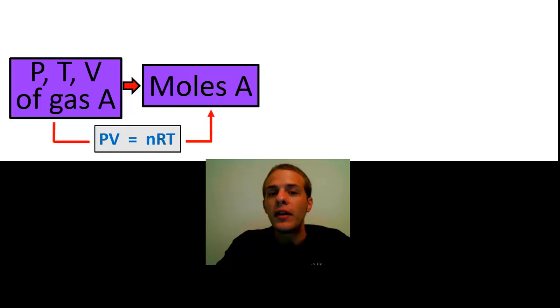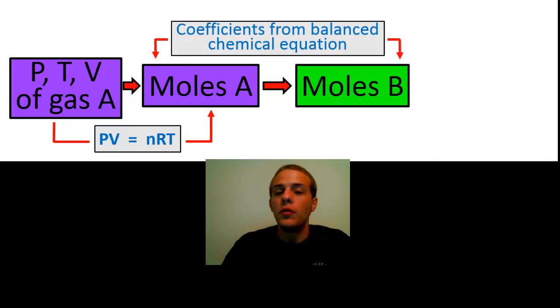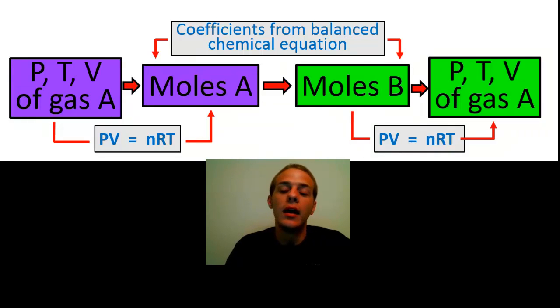This is where PV equals nRT is going to come in once again. Then once you have the moles of one of your gases, you can convert that into moles of another gas in that chemical reaction, and it's going to be using the coefficients from your balanced chemical equation. Just like in the example above for solids and liquids, you still use a balanced chemical equation to go from moles of one thing to moles of another thing. And then once you have the moles of that other thing, in this case we're calling it B, you can use the ideal gas law once again to convert to the pressure and or temperature and or volume of that other gas in the chemical reaction.